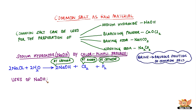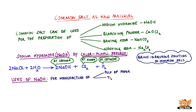Sodium hydroxide is used in many industries, including in the manufacture of pulp and paper, textiles, soaps and detergents, and as a drain cleaner.